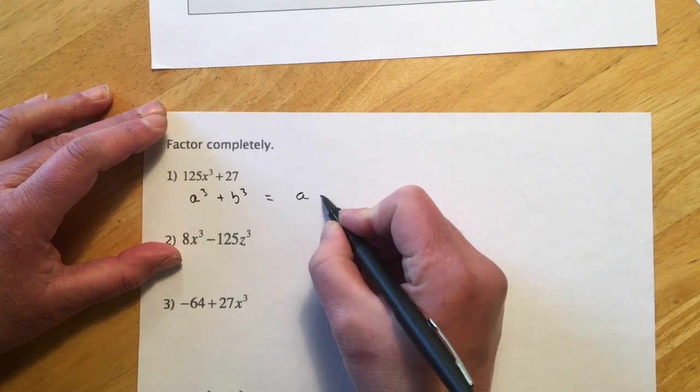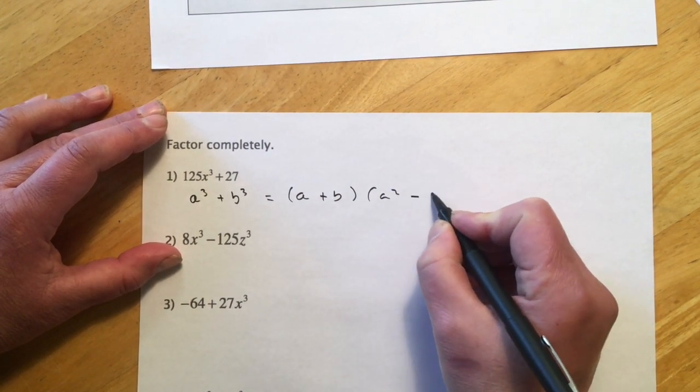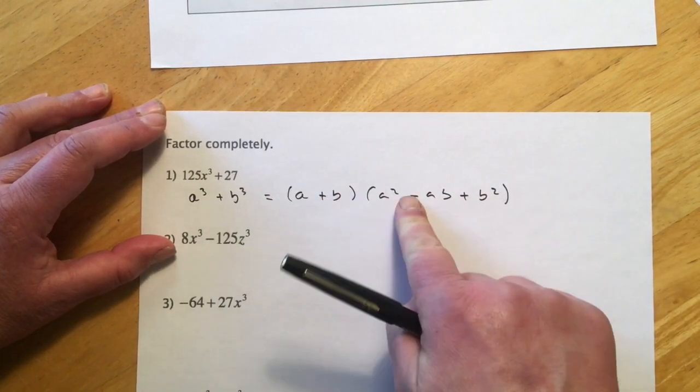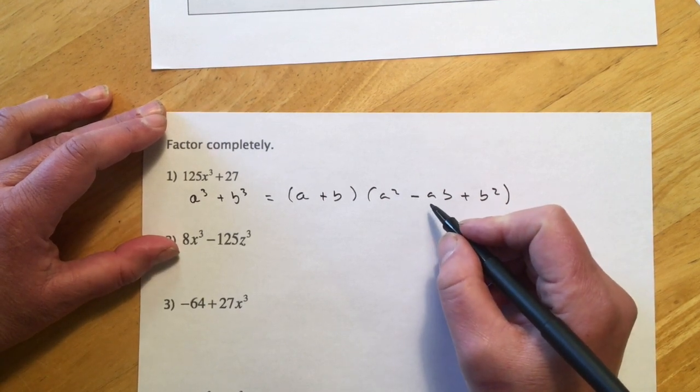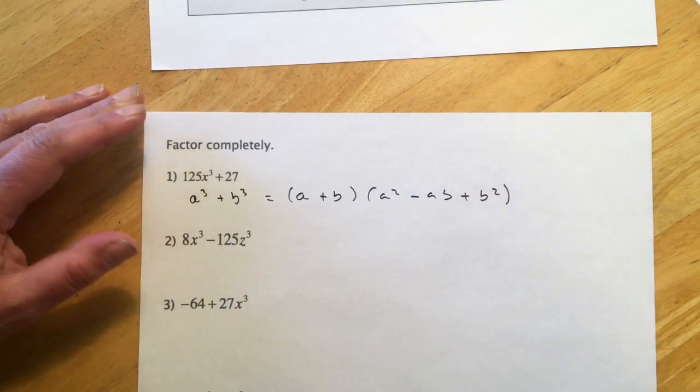So this is like our A³ plus B³. And so the formula goes A plus B, and then A² minus AB plus B². And so same, opposite, positive.